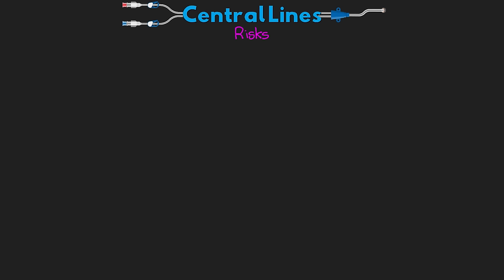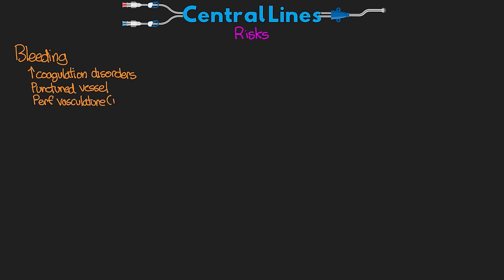As with anything, there are risks and complications associated with a central line. Fortunately, many of these can be mitigated with proper insertion, removal, and care of the line. The first risk is bleeding. This is especially concerning for patients who have coagulation disorders, but anytime we're puncturing a vessel — or even removing lines — this potentially gives a site for blood to leave the vasculature, creating a risk for bleeding. This can also result during insertion if we have a perforation of the vasculature, which can potentially be a life-threatening situation.